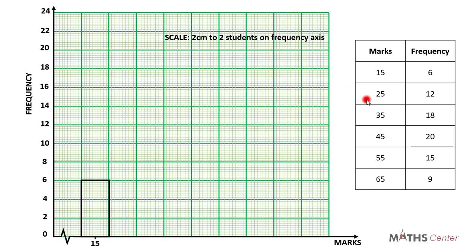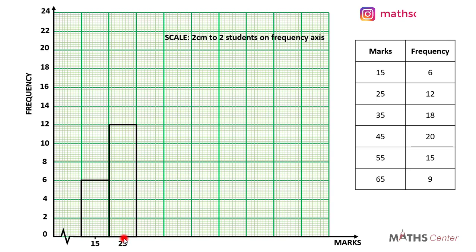Let's move on to the next bar, which will be for 25. The frequency is 12. Remember that on the histogram there are no spaces between the bars, so the bar for 25 will be drawn attached to the bar for 15. The mark which is 25 will be at the center — at the 5th division.